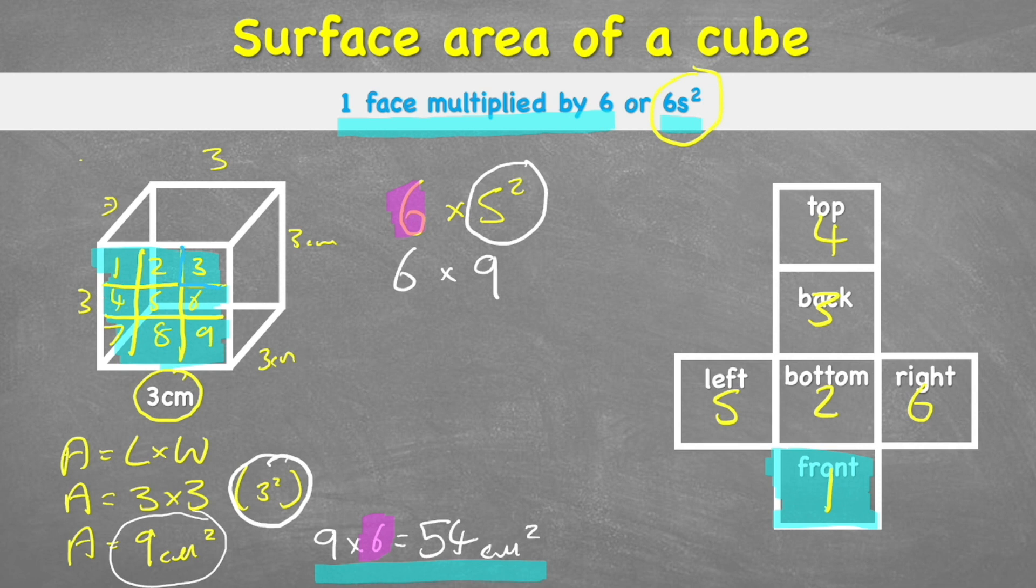We realized that we didn't just have one face, we had six of them. And again, six times nine equals 54 centimeters squared. Same answer.